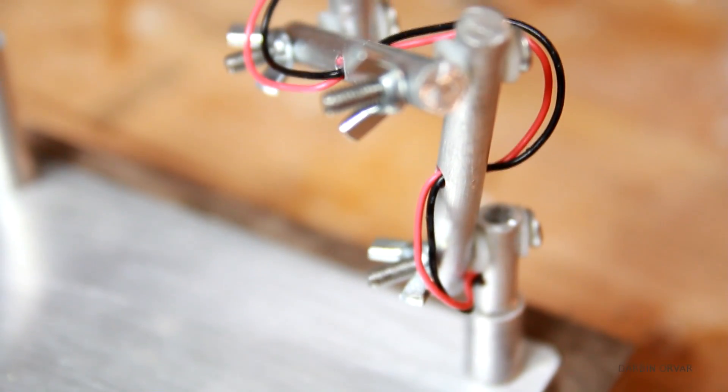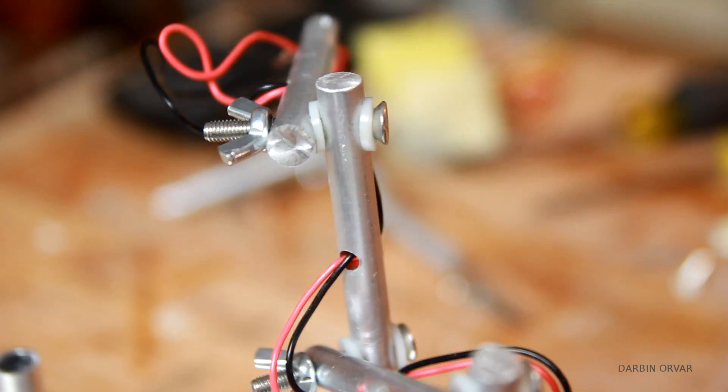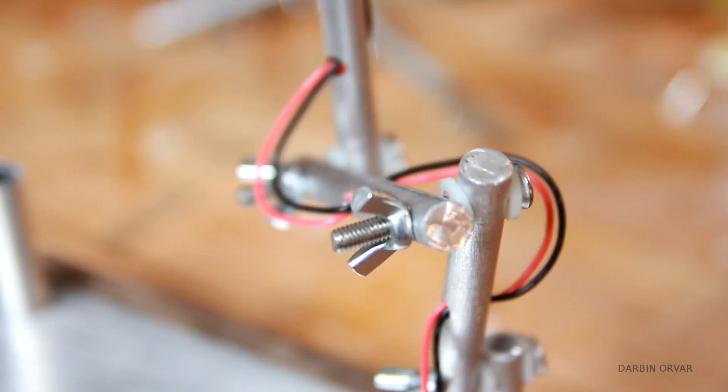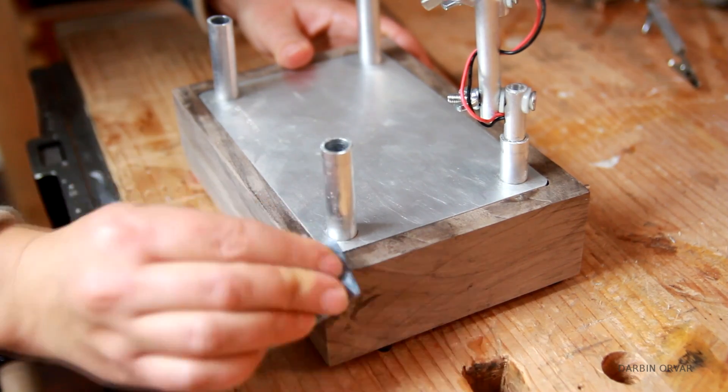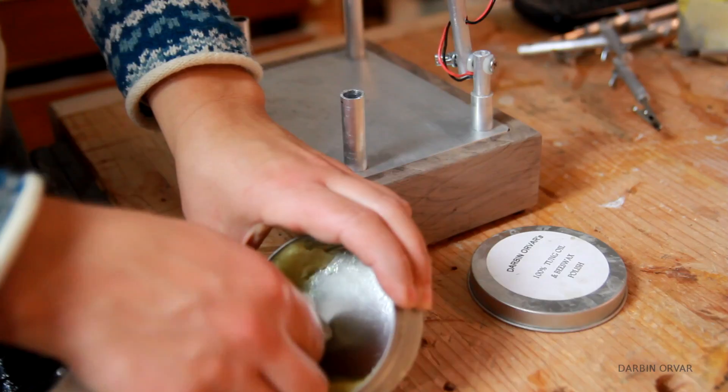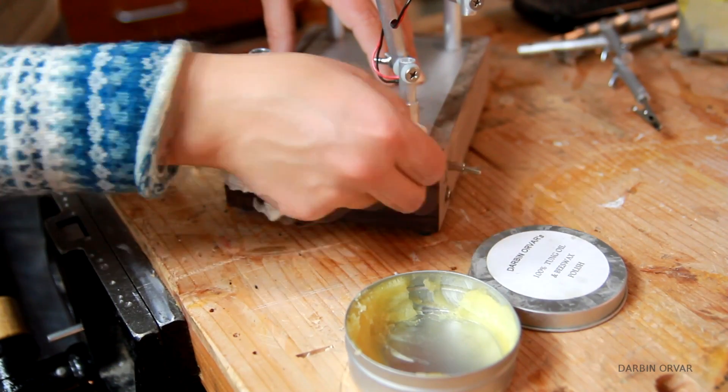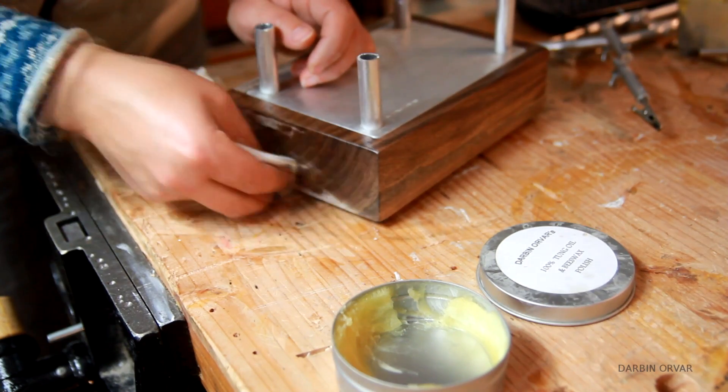So here you can see I have the wires going up through the light part here through holes I've drilled. And I chose to leave the wires exposed because I thought it looked pretty cool. Then I'm sanding the edges to create a light chamfer and then I'm finishing the walnut with some of my tung oil wax polish. And it really brings out the color. Looks great.